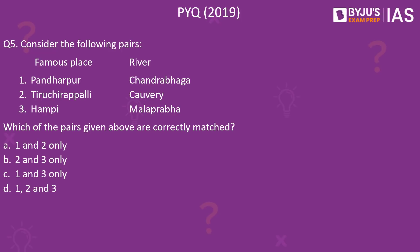The first pair is matched correctly: Pandharpur is located on the banks of the river Chandrabhaga. The second pair is also correctly matched: Tiruchirapalli is located on the banks of the river Kaveri. However, Hampi — which was the capital of the Vijayanagara kingdom — was located on the banks of the river Tungabhadra, not Malaprabha. So the third pair is wrong. The correct answer to this question is option A, 1 and 2 only.